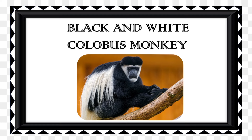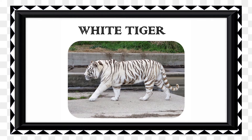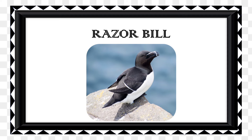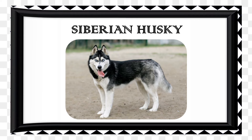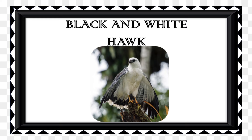Downy Woodpecker. Black-billed Magpie. White Tiger. Black and White Ruffed Lemur. Razorbill. Royal Palm Turkey. Eider Duck. Siberian Husky. Egyptian Goose. Black and White Hawk. Holstein Cow.